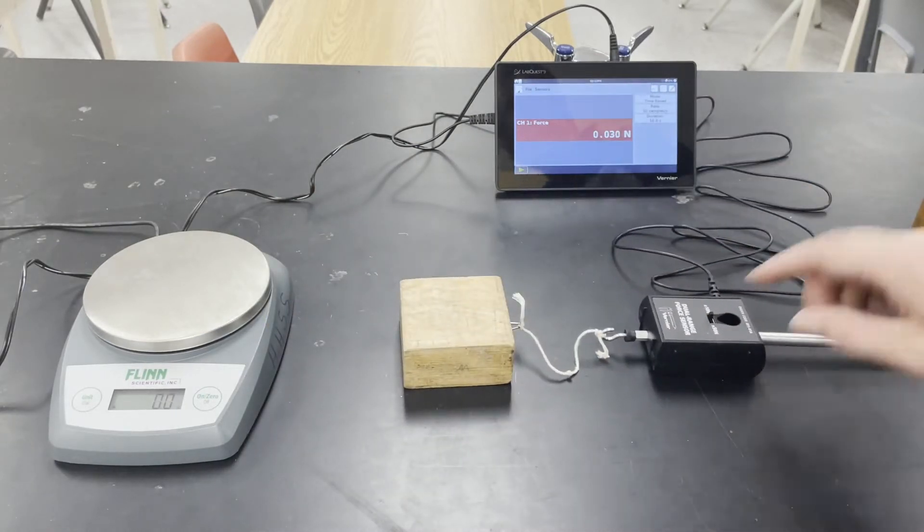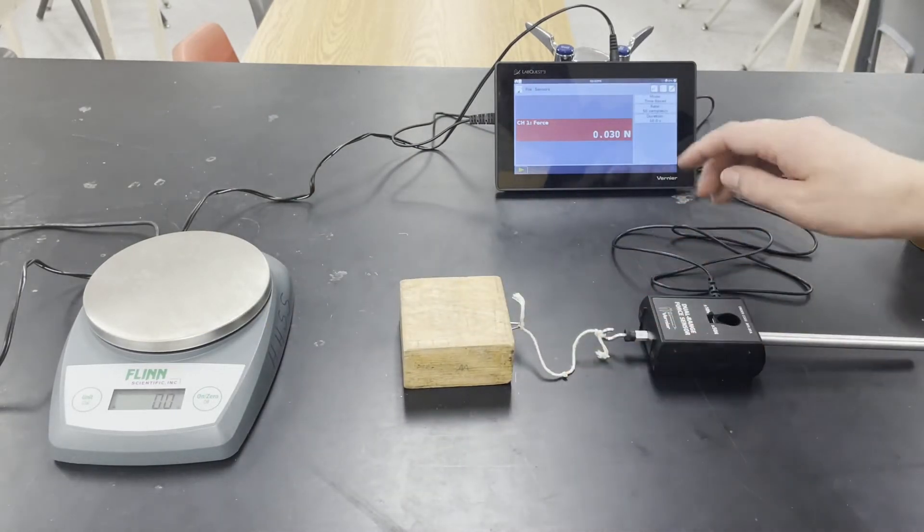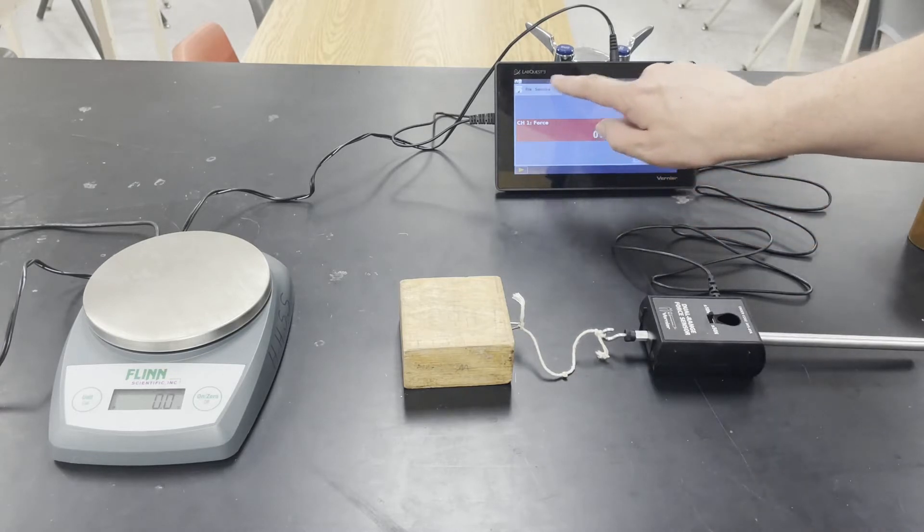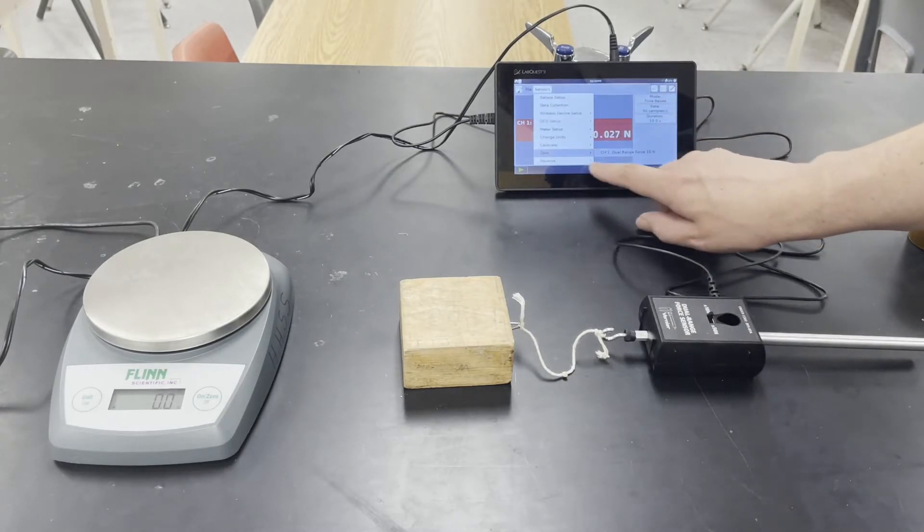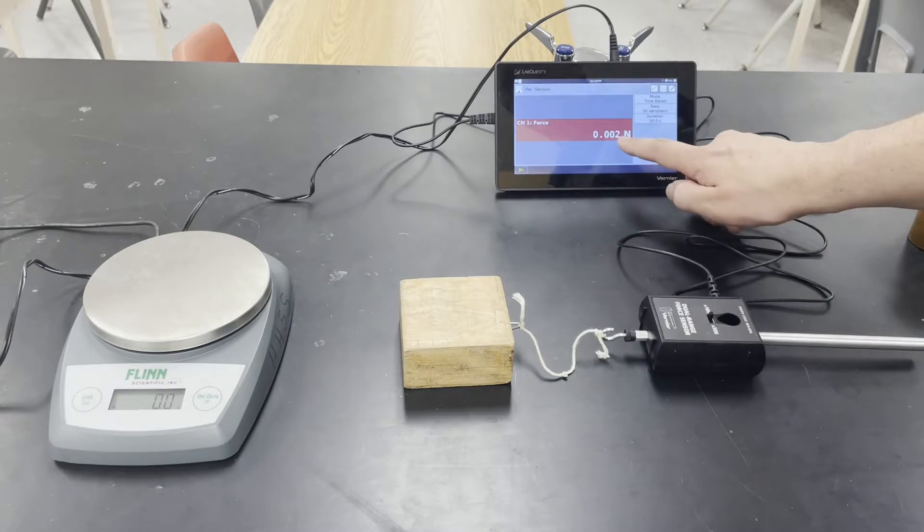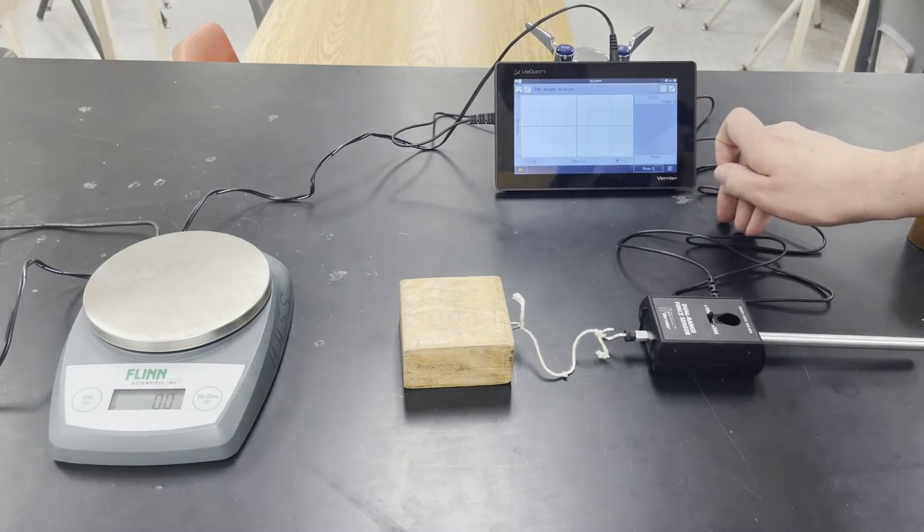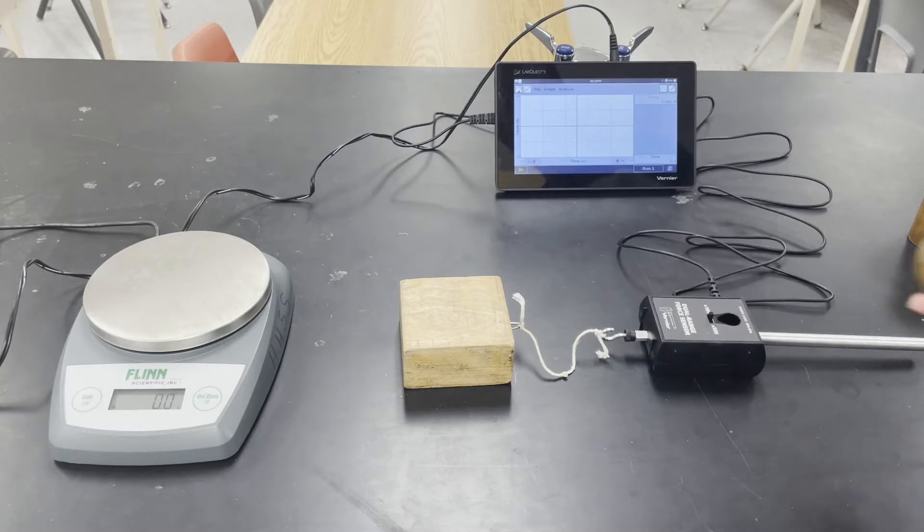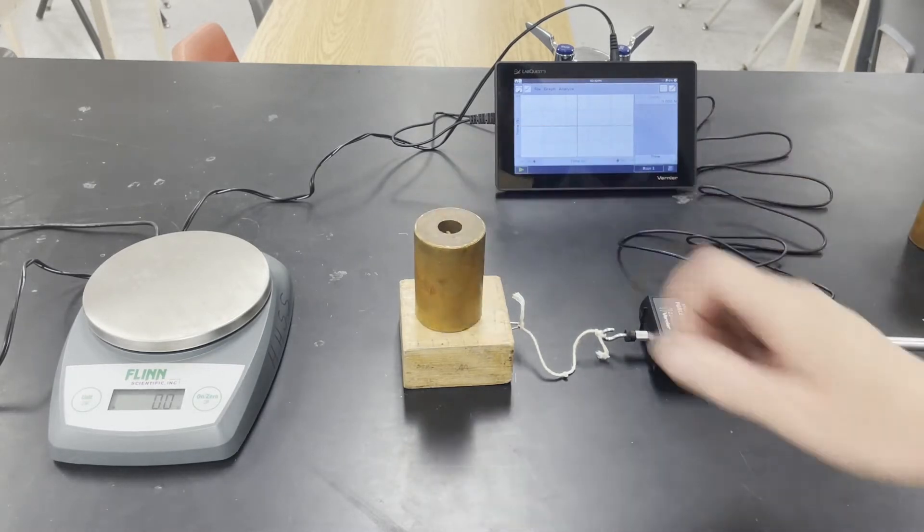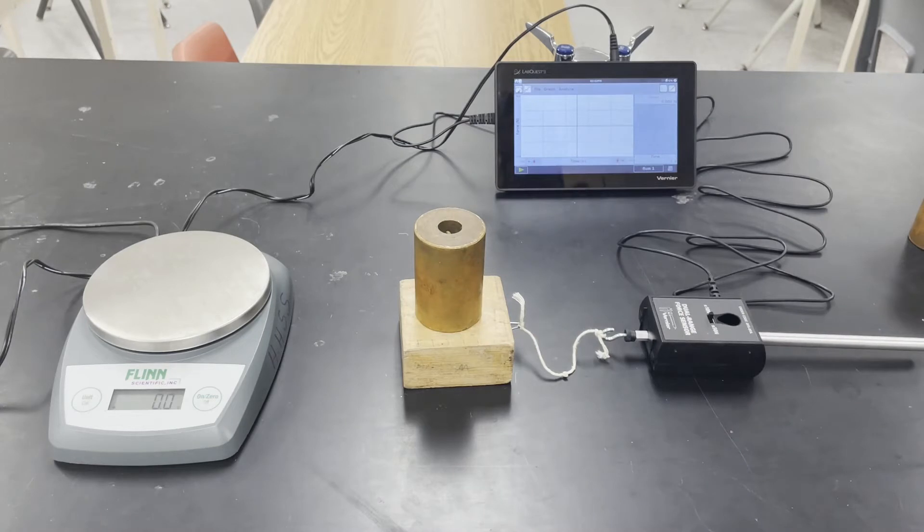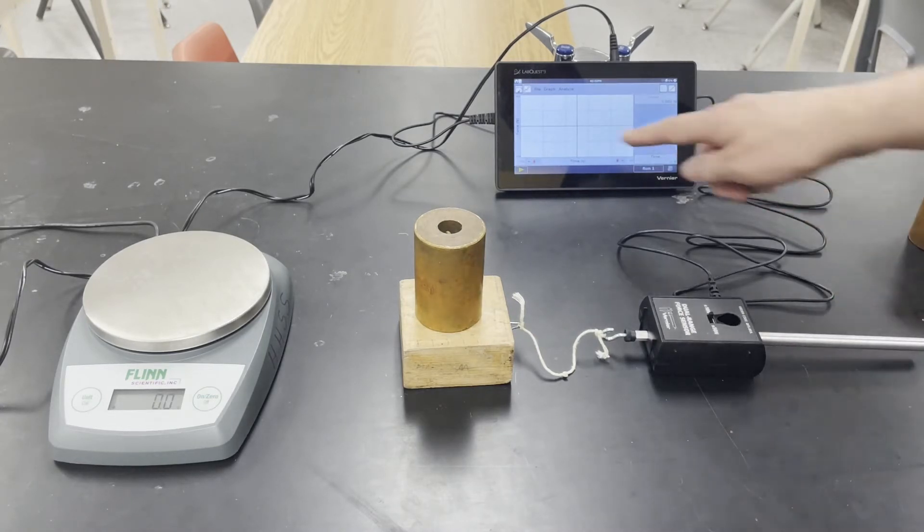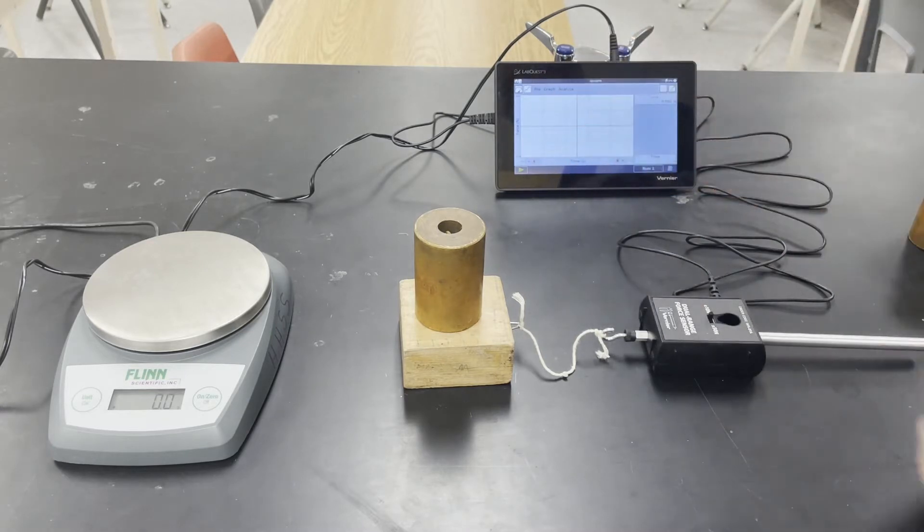Next thing we're going to do is making sure our line is not taut. We're going to come over here and we're going to zero the sensor so that we're reading a force of zero. Now we're going to go to graph mode. We're going to start by adding one kilogram to the mass and then we are going to pull a sample to see what our force over time looks like.